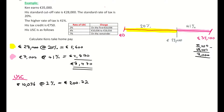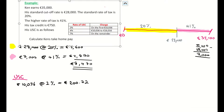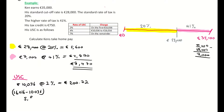The next section in the table is 4% on the balance between 10,036 and 16,016. There's a subtraction needed: 16,016 minus 10,036 gives 5,980 euro. At 4% USC — dividing by 100 and multiplying by 4 — that comes to 239 euro and 20 cent. That's the second band of USC.